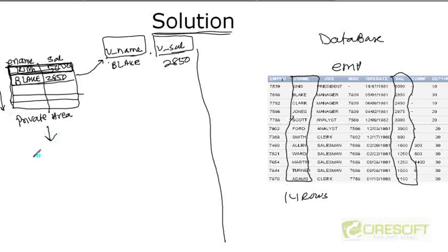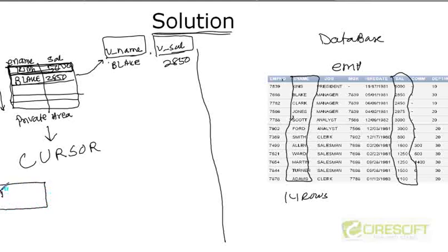This private SQL area is also called a cursor. By using a cursor, I can solve the problem when a query returns multiple rows. The cursor lifecycle starts with: first — declare. When you declare, you are just creating a private SQL area. You name it just like a variable — let's say the cursor name is C1.